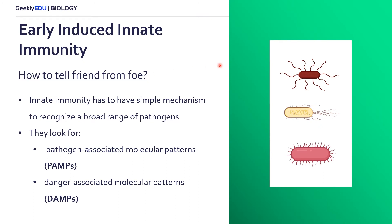Our innate immune cells have to be able to tell what is friend from foe — they have to be able to identify pathogens within our bodies. Unlike the adaptive immune response, where cells have a very advanced way of identifying specific pathogens, our innate immune response has to have a simpler way to identify a broad range of pathogens. To do this, they look for certain things called pathogen-associated molecular patterns, or PAMPs — molecules found on the outsides of pathogens that are very unique to a certain pathogen type.